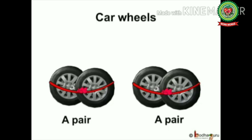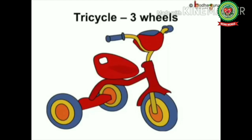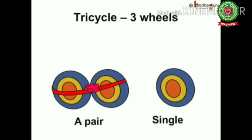The wheels on the back side also make a pair. Now do you all remember the tricycle which all kids love to ride as a baby? Let's see how many pairs can be made from a tricycle's wheels. One, two, three wheels. The two wheels at the back make a pair, but one single wheel is at the front side and does not make a pair because it is single. So only one pair can be made out of three, and one wheel will be left alone.